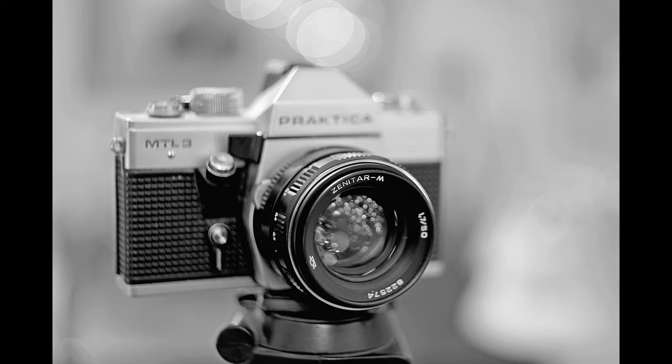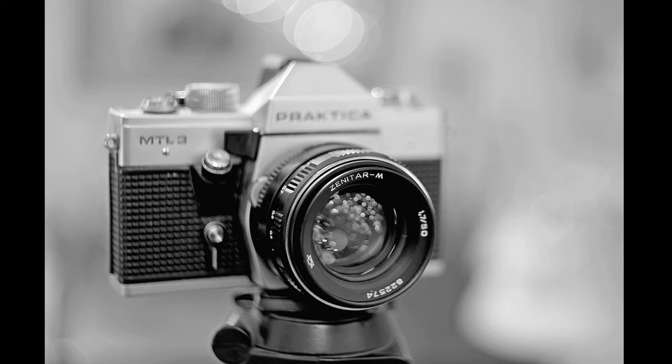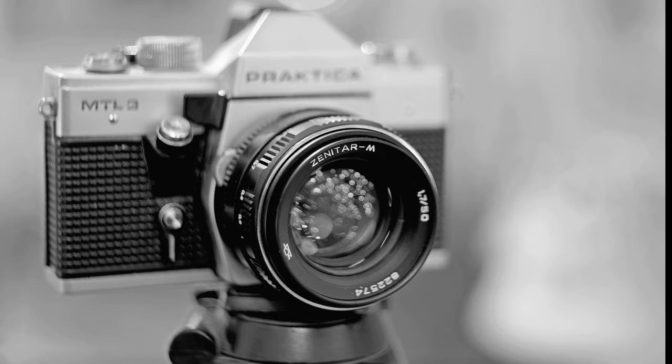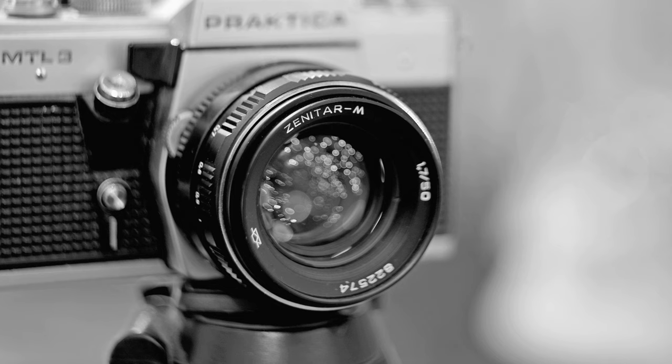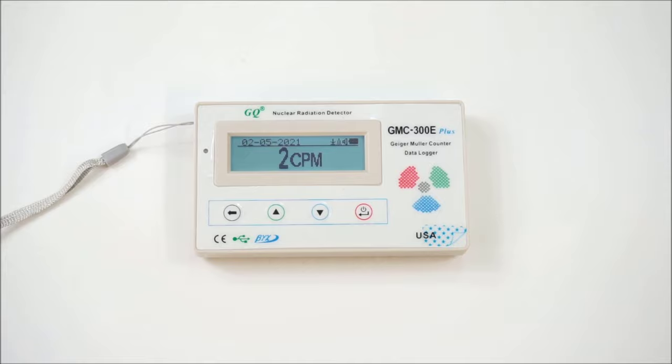Let's start with the Zenitar M50 f1.7. I'm curious to test this lens because there are some conflicting views about its radioactivity. Apparently the glass includes some lanthanum, and lanthanum can have small traces of radioactive isotopes. However, some people say that the lens is not radioactive at all.